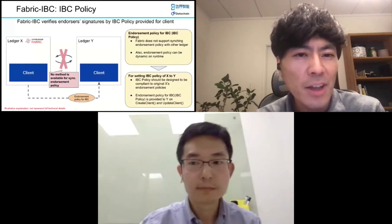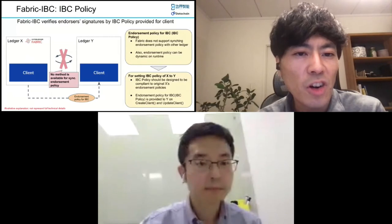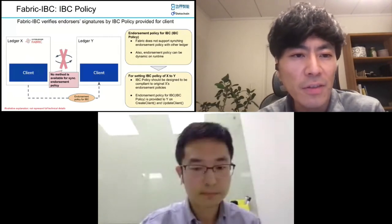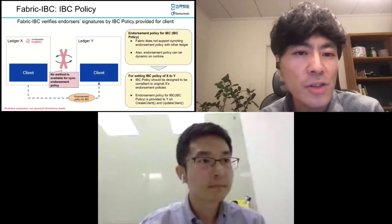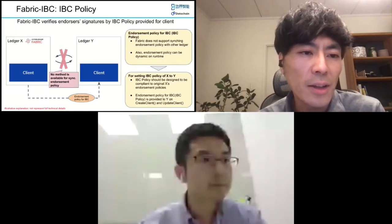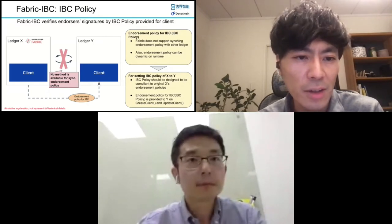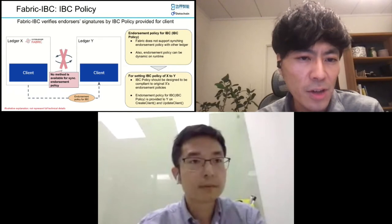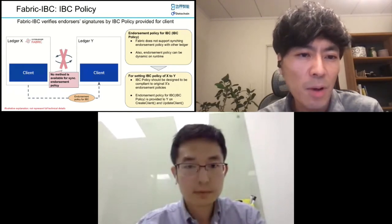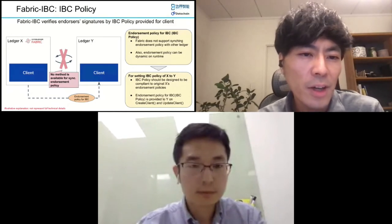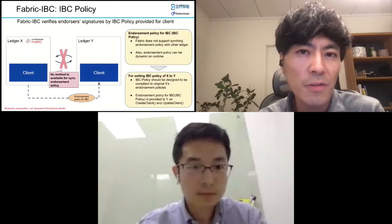An endorsement policy can be dynamic at runtime. As such, it is designed to provide a policy as a property for a client in LedgerY. You can call createClient to set an IBC policy, and call updateClient to verify a new one with the old one and then update it. This policy should be compliant with LedgerX's original endorsement policies. The client in LedgerY checks endorsement signatures according to the IBC policy for verification.